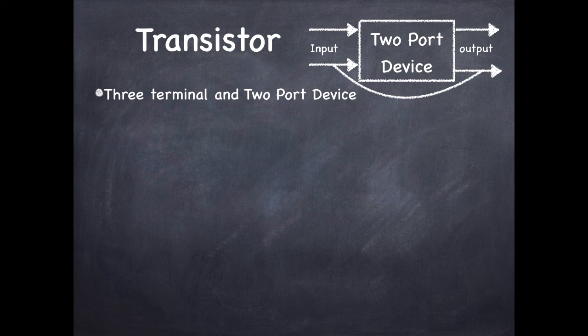As a two port device requires four terminals and transistor being three terminal device, one of the terminal will be common to both input and output side. This gives rise to different configurations in which the transistor can be used, and transistor exhibits specific characteristics in each configuration.